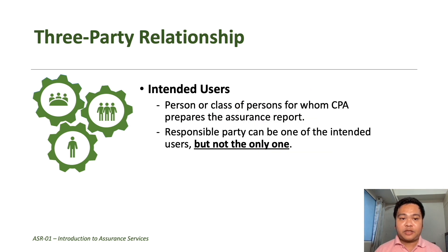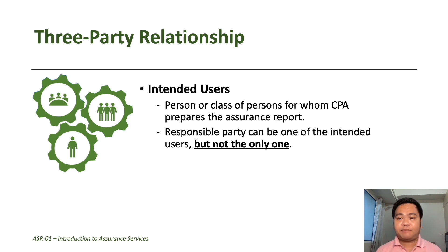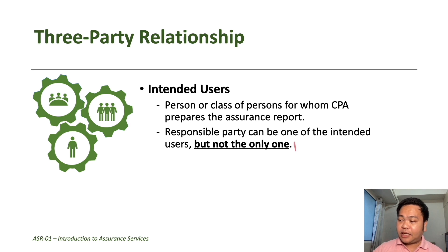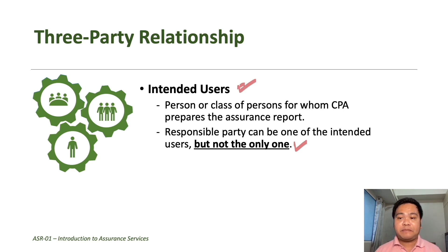The last part of the three-party relationship is the intended users — the person, persons, or class of persons for whom the CPA prepares the assurance report. The responsible party can be one of the intended users, but not the only one. If the responsible party and the intended users are one and the same, there would only be two parties involved instead of the three required for an assurance engagement.